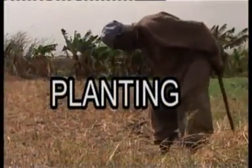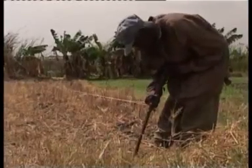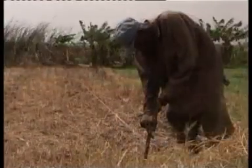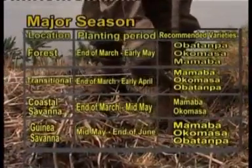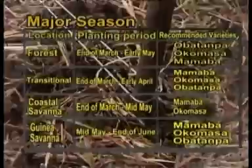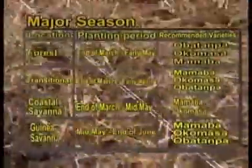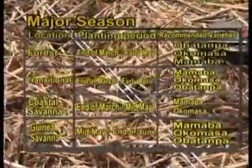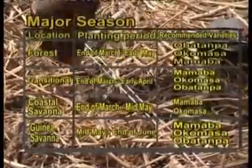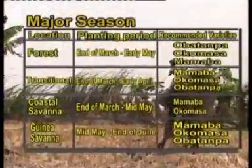Planting periods are based on the establishment of the rains in each agroecological zone. For the major season in the forest areas, the planting period is between end of March to early May. The recommended varieties are Obatampa, Okomasa, and Mamaba. In the transitional areas, the planting period is between end of March to early April, and the recommended varieties are Mamaba, Okomasa, and Obatampa.